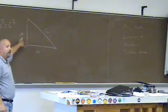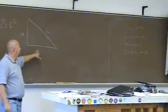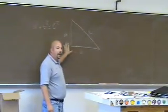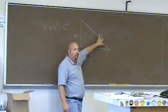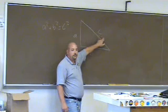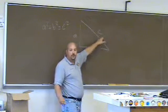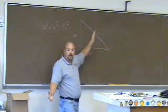If I square the altitude, I square the base, I add those two together, I should equal the hypotenuse. C is always the hypotenuse, which is the long side of the triangle.